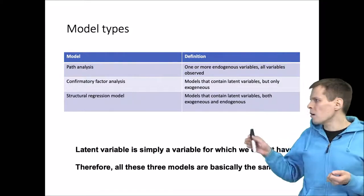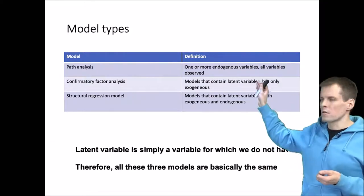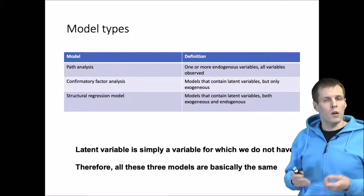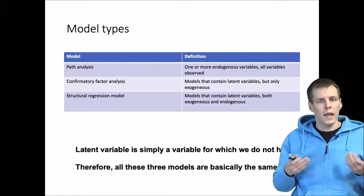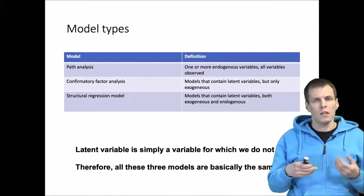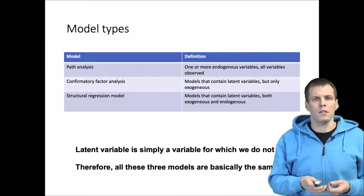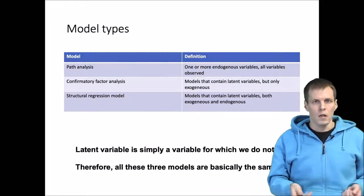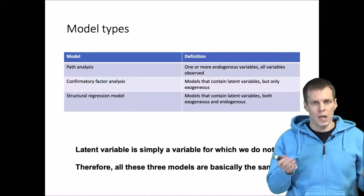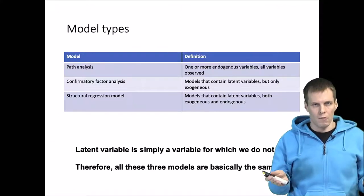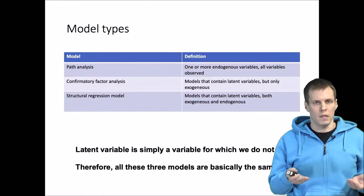The path analysis model consists of models that don't have any latent variables except the error terms. These are the kind of models that econometricians would refer to as simultaneous equation models, and you would use, for example, GMM or seemingly unrelated regressions for their estimation.